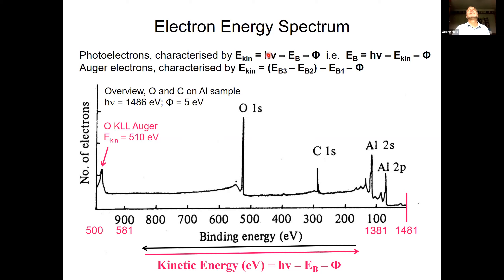To determine binding energy, we need to know the photon energy and measure the kinetic energy. The work function is a small and usually constant energy contribution. We need a monochromatic photon source with energies typically above 100 eV, because only core electrons with energies typically 100 eV and above are characteristic for the elements they come from — valence electrons are not. We can get those photons either from X-ray anodes with a well-defined anode material, typically aluminium or magnesium, or we can use synchrotrons.